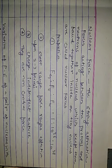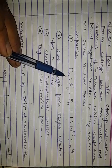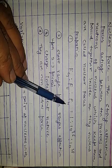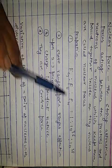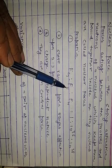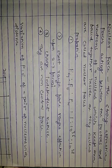The first property: Fg is gravitational force, Fe is electromagnetic force, and Fn is nuclear force. The ratio of gravitational force to electromagnetic force to nuclear force is 1 to 10 to the power 36 to 10 to the power 38.